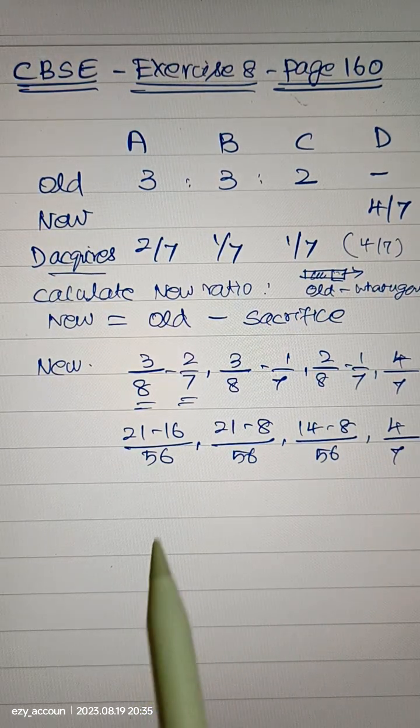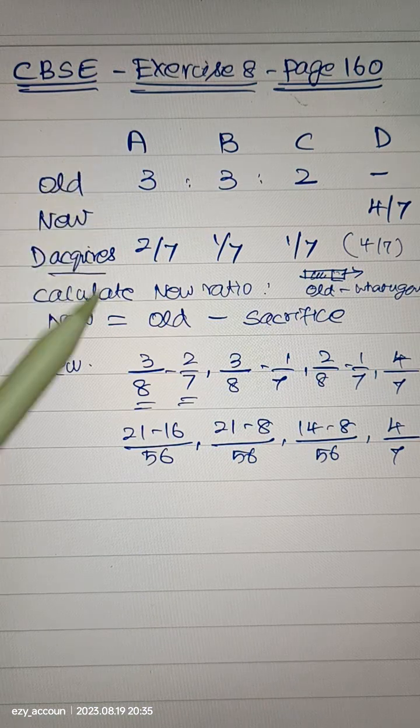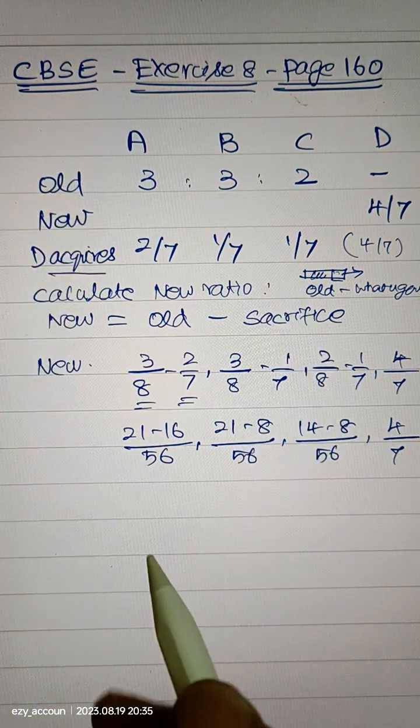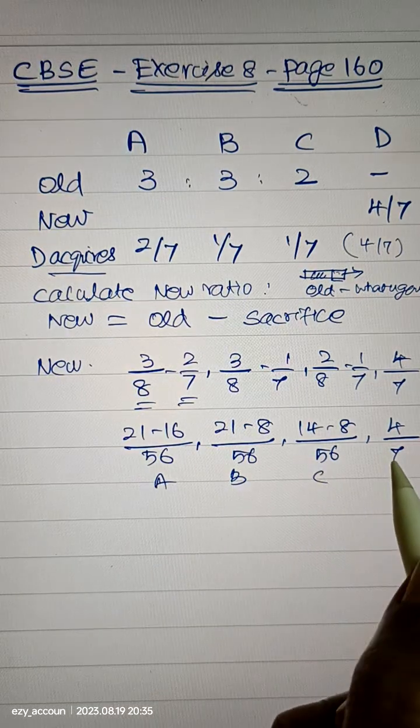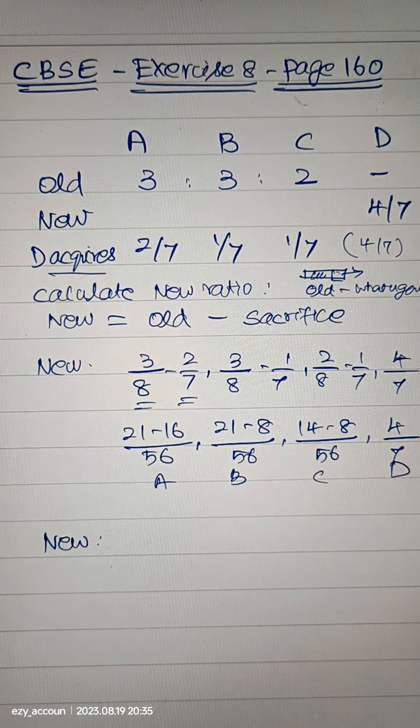So the way I am writing is all the partners, each column. So this one is A, this one is B, this one is C, this one is D.